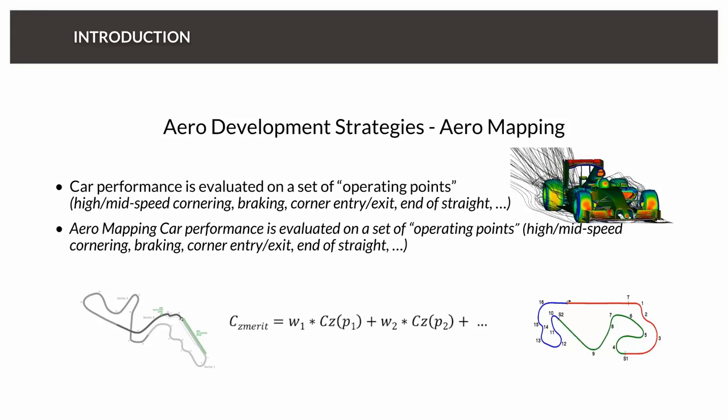Maybe you think that lower drag on the straight is less important than a lot of downforce in the corners, so you make different choices and compromises. This merit function you're trying to optimize will be different depending on what conditions you put into it. Here's an example — to the left is the layout of the track in Suzuka, Japan, and to the right the track in Barcelona. They have quite different characteristics, and whether you optimize the car for one track or the other you might end up with two different vehicles. The whole idea with aero mapping is to make you think about what conditions you need to optimize for — it won't typically be one single condition but a combination of things.